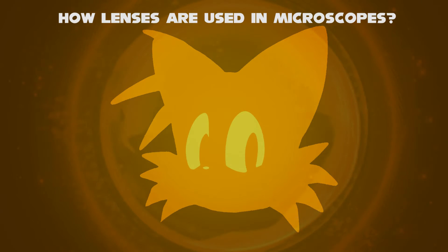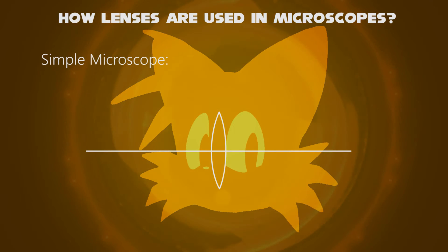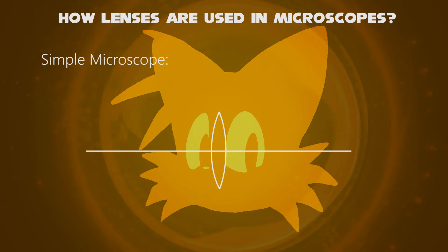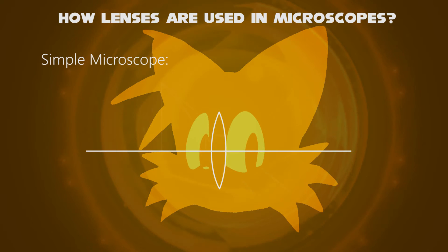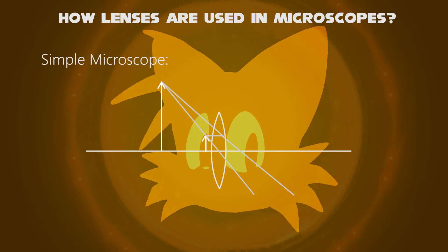In simple microscopes, only one convex lens is used, like a magnifying glass. The diagram of a lens uses six possible cases — you can place the object anywhere to see if the image is real and inverted, or virtual and erect.